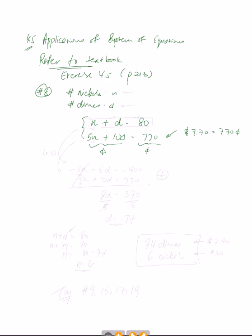I choose to use elimination. I'm going to focus on n, and I need to make the two coefficients opposites. So I'm going to multiply the first equation by negative 5. That gives negative 5n minus 5d equals negative 400.